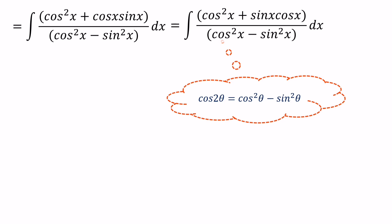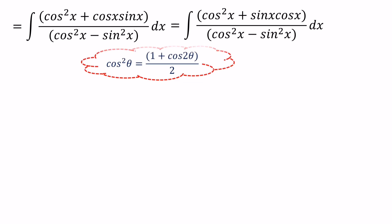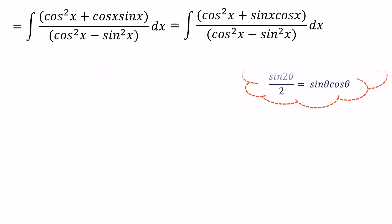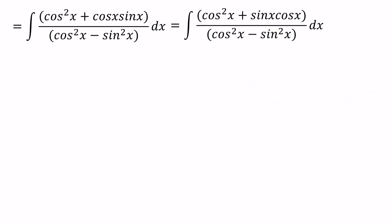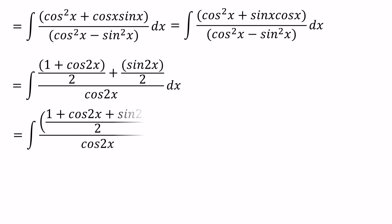We can also write cos squared x as 1 plus cos 2x over 2, and sin x cos x as sin 2x over 2. Taking 2 as a common denominator in the numerator, the expression becomes 1 plus cos 2x plus sin 2x over 2, all divided by cos 2x.